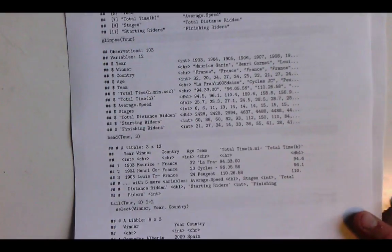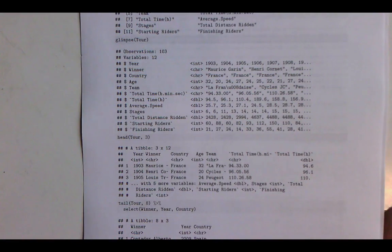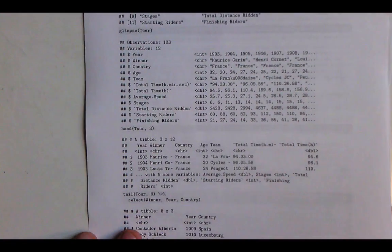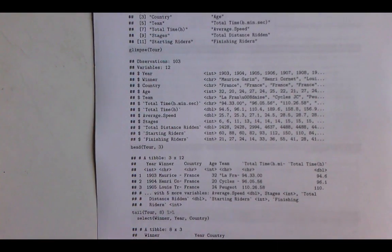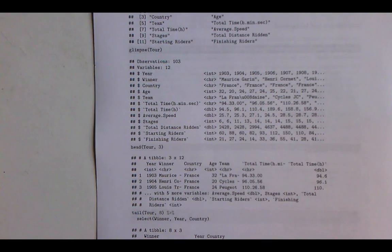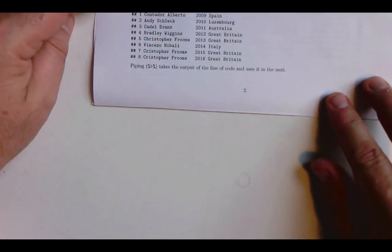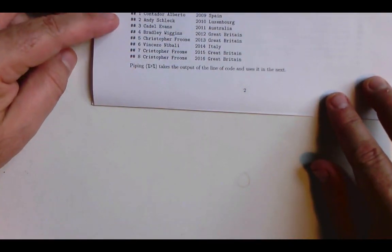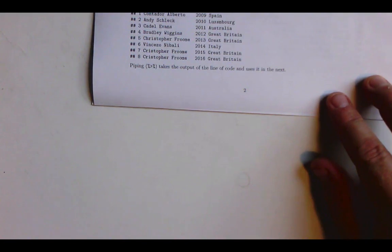We then create an object called tour for the Tour de France that contains the variables of interest. So this short PDF, which also we have the R markdown version of, will let us read in this, see what the variable names are, and go ahead and answer some simple questions. Like, we can go ahead and say, tell us what the last eight winners were, and let's select things down to be the winner, year, and country. And that pipe operator, that percent greater than percent, is something we'll see throughout the course. That takes the output of a particular line of code and uses in the next.